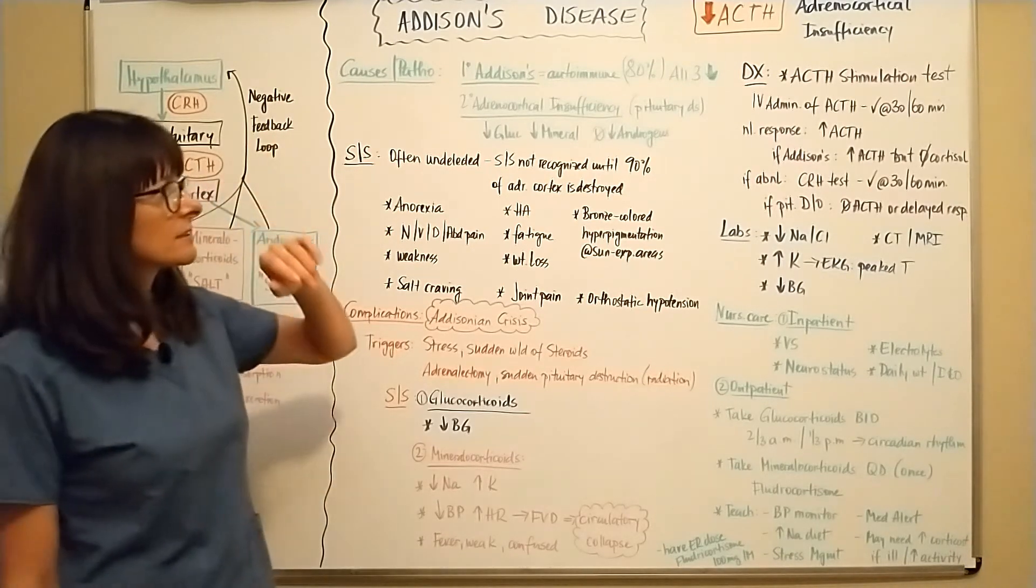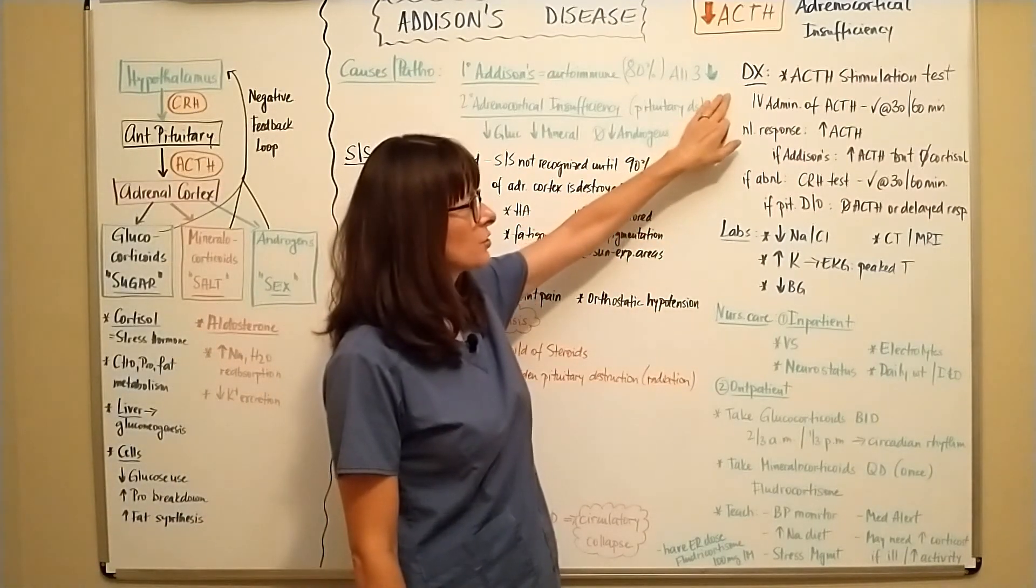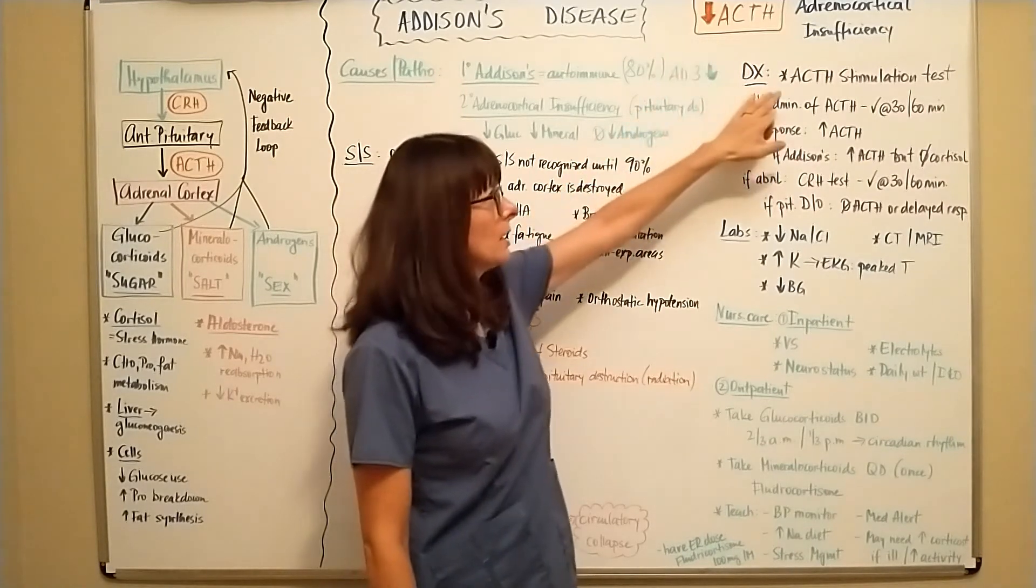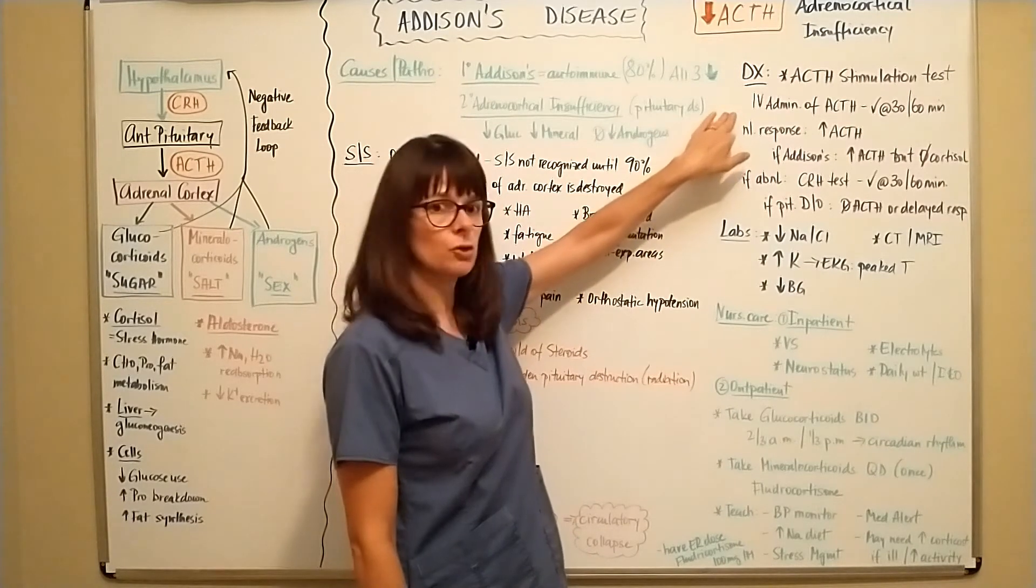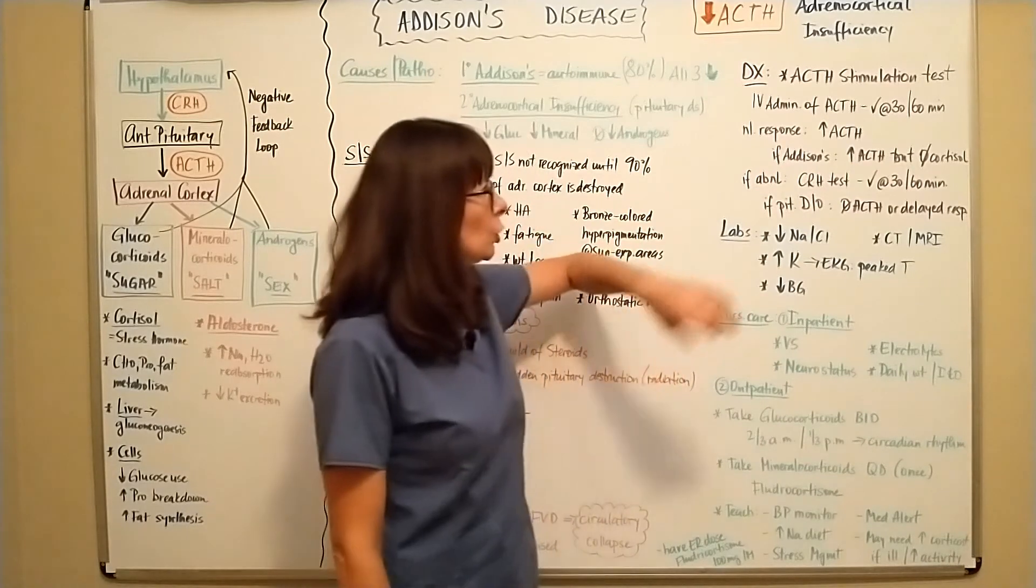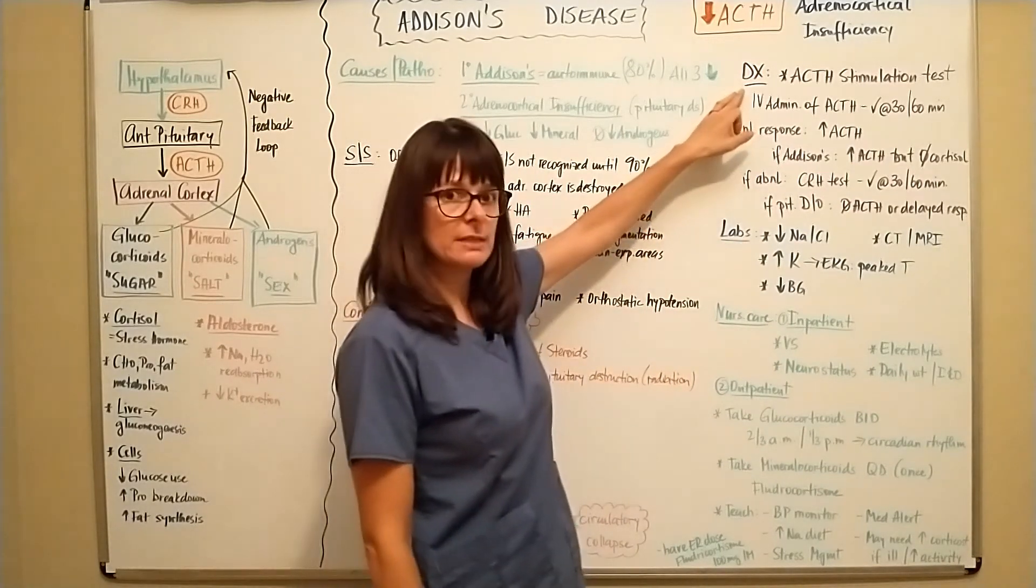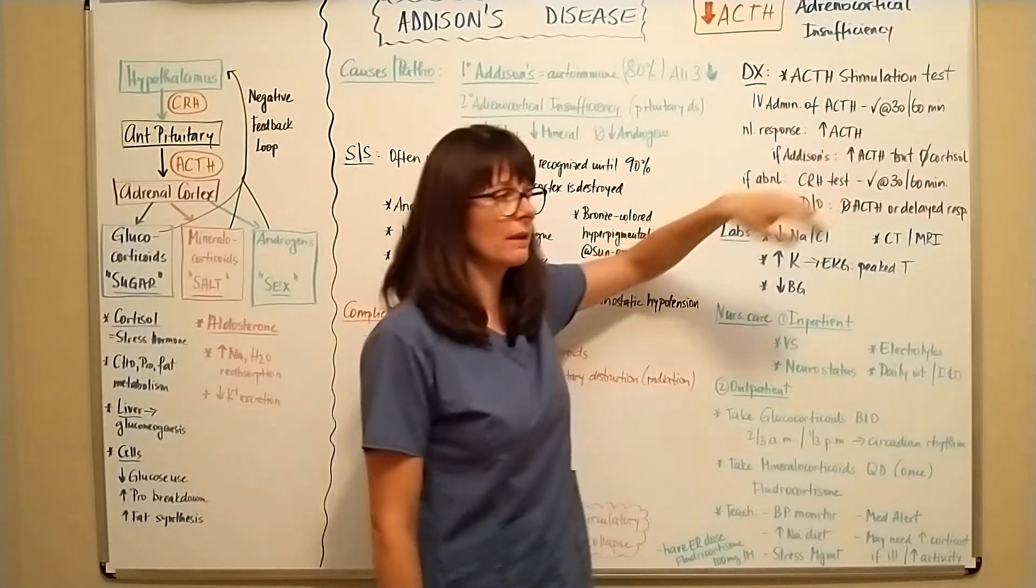Now, how is Addison's disease diagnosed? It's usually with an ACTH stimulation test. So now, if we're suspecting ACTH is low, we're going to give the patient IV ACTH and check the serum levels at 30 and 60 minutes. Normal response that's expected would be if we administer ACTH, we would expect the ACTH serum levels to rise.